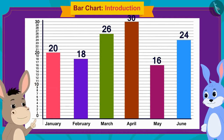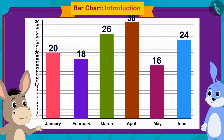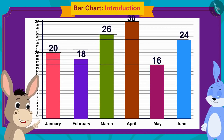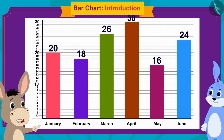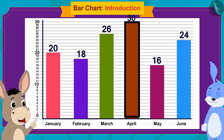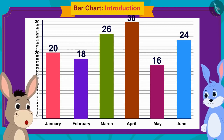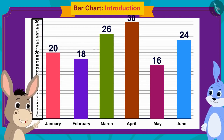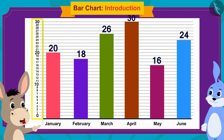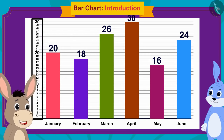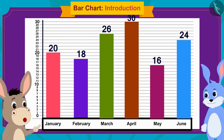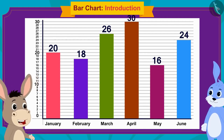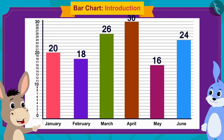Bunny, look — our bar chart is ready. Here the height of each bar shows the amount saved in that month. The bars in the bar chart are rectangles of exactly the same width and the space between them is also equal. On the vertical line, I have written equally spaced numbers from 1 to 30 to show the amount saved. And on the horizontal line, I have written the names of the months. Now, can you tell in which month you saved the least amount of money?